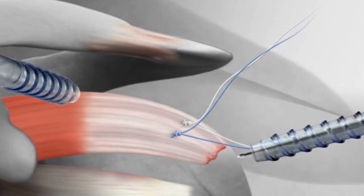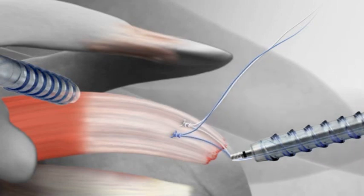The surgeon then creates two additional sockets laterally. Sutures passed previously are crossed and secured to the bone using knotless push-lock anchors.